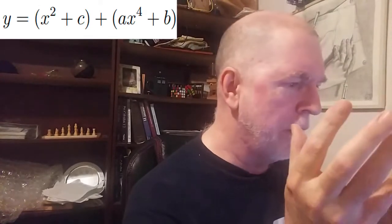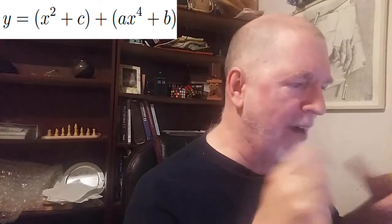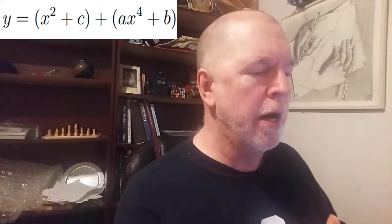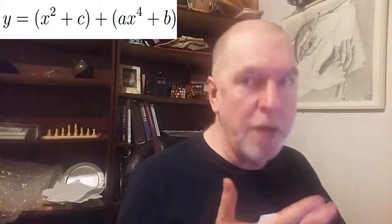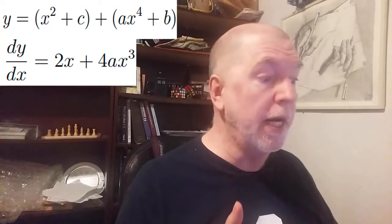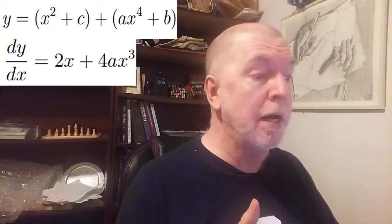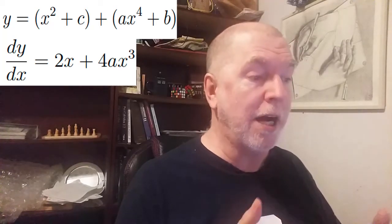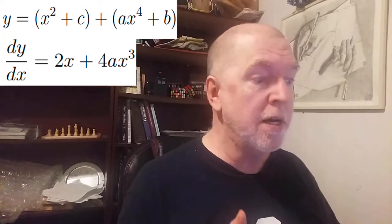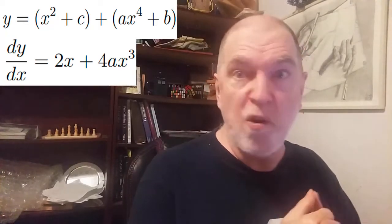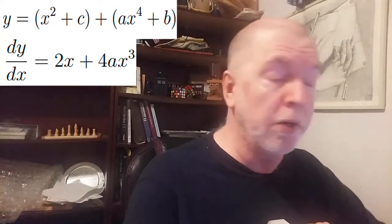Here's an example of two functions added together: x squared plus c plus ax to the fourth plus b. We differentiate them one after another. So the x squared plus c, that's 2x. And ax to the fourth plus b, that's 4ax cubed. And the b and the c, they have no effect on anything. They're not part of the derivative.